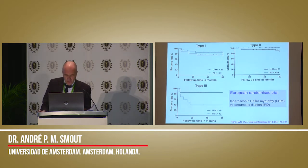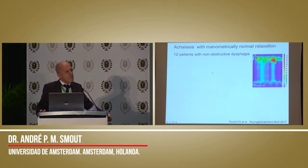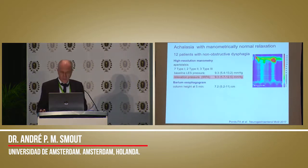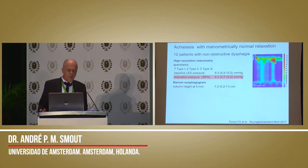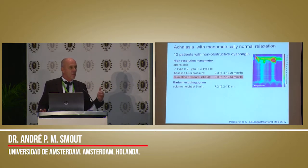Chicago 3 still has some shortcomings. One of them is that you may find a patient who has dysphagia, has stasis on the barium swallow, but has absent peristalsis with a normal IRP. We studied 12 of those patients with a method called impedance planimetry, also known as FLIP or EndoFLIP, in which you measure the distensibility of the lower esophageal sphincter. We found that in these patients, the distensibility was diminished whereas the IRP was normal. We treated them as if they had achalasia, and they responded as if they had achalasia. So there is a variant of achalasia which you will not find if you follow the Chicago classification.